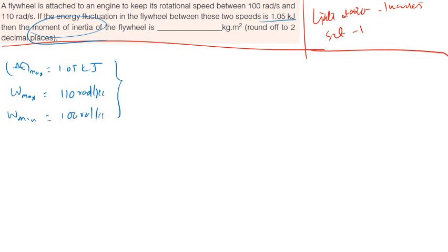As we know, delta E maximum for flywheel is equals to one by two I times omega maximum square minus omega minimum square.